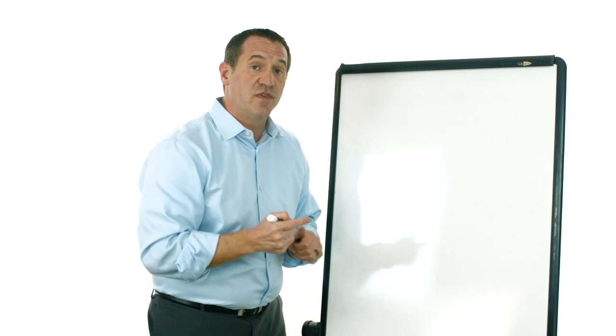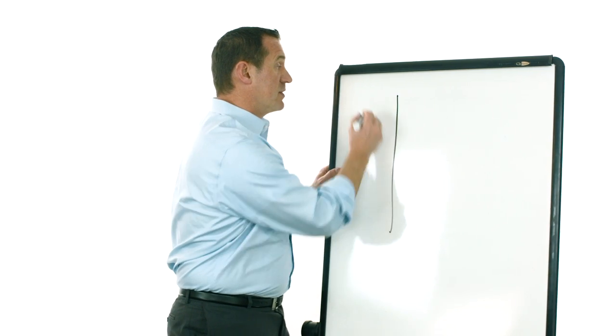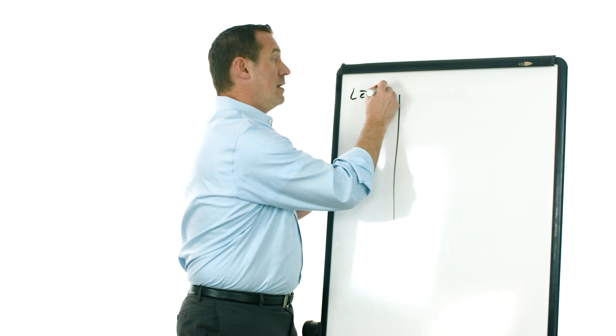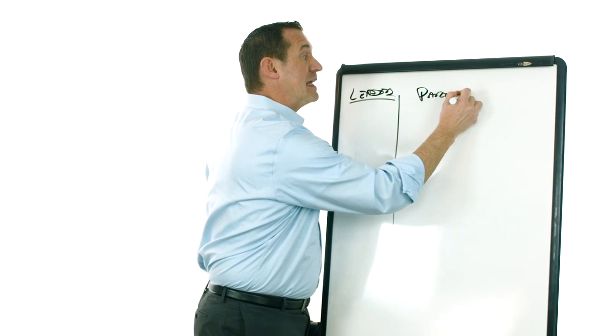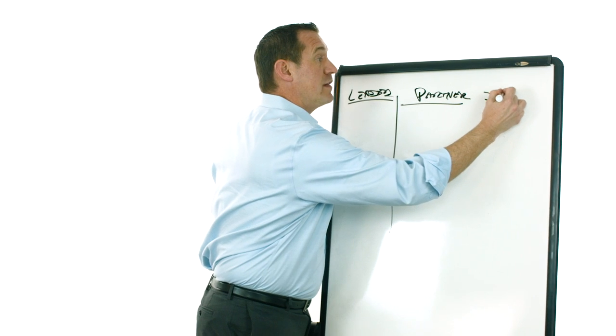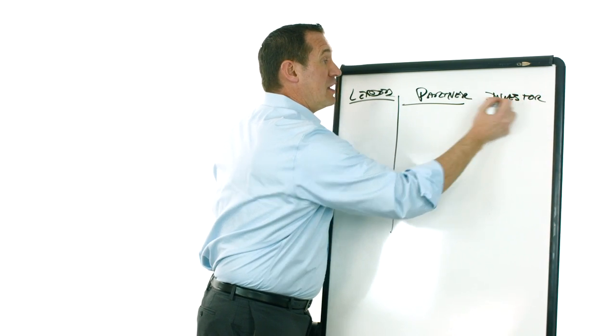So make sure that you don't use the word investor until it's appropriate. Now, as you can see with the title of this video, there are three classifications: there is the lender, there is the partner, and there is the investor.